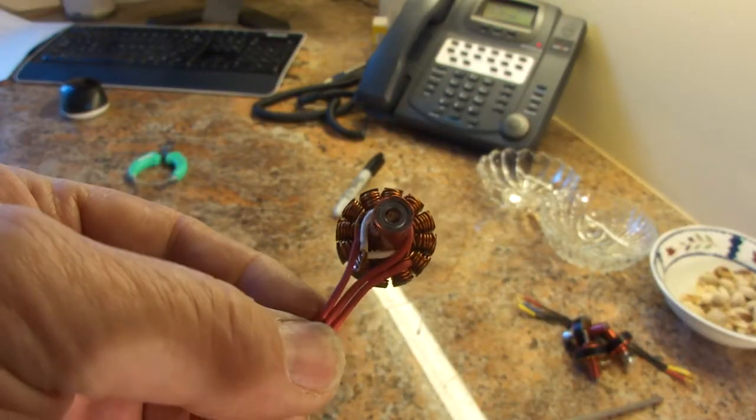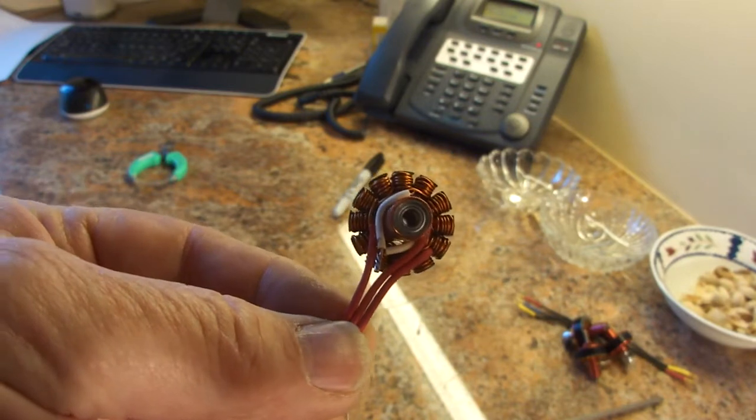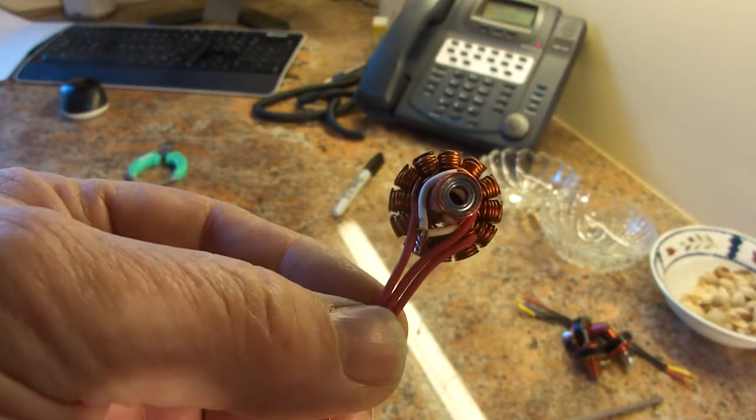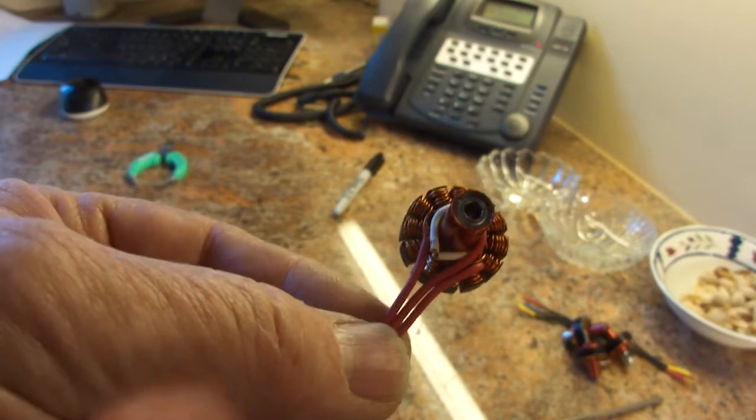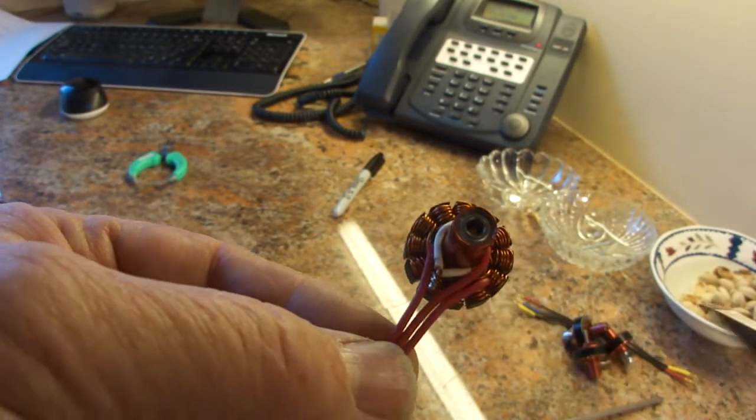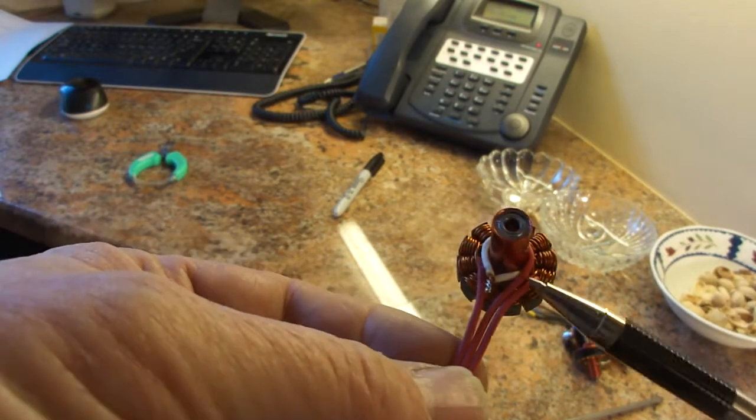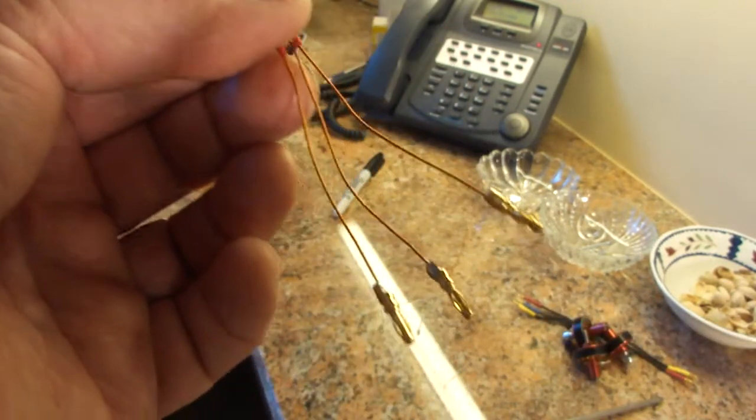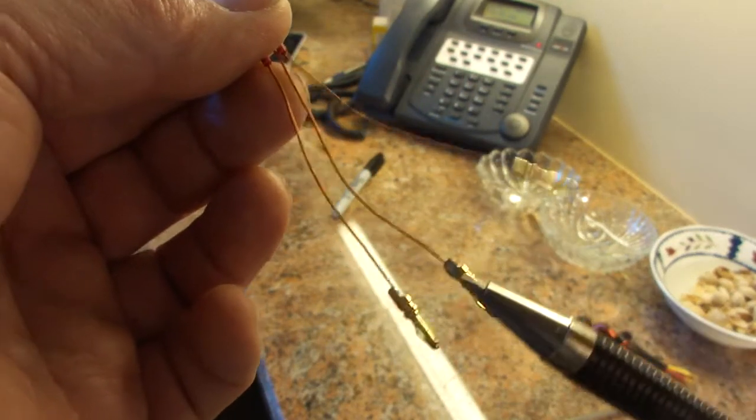Okay, we got the shrink tube on the Y connections. And you can see we've got them all soldered together right here with the white shrink tube. And we've got the red shrink tube around our motor leads. And we've already got our bullet connectors on.